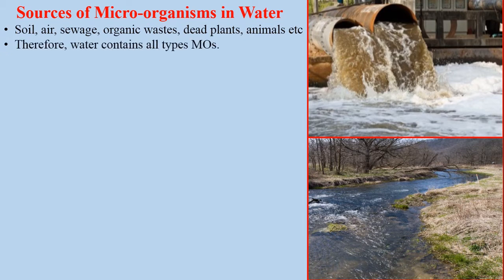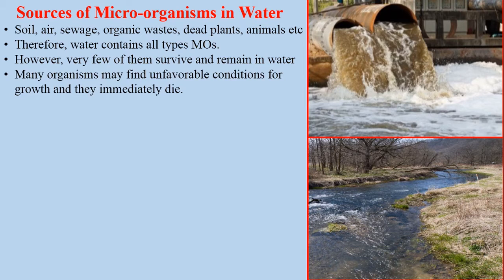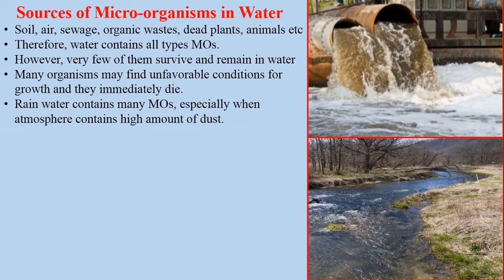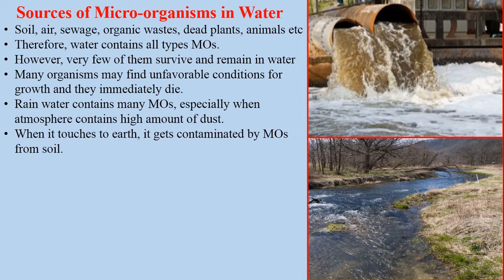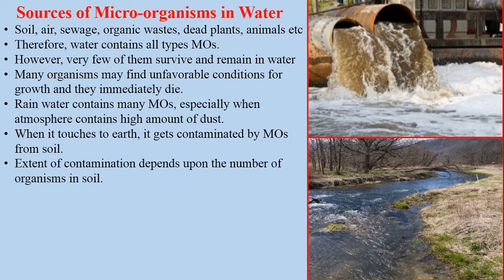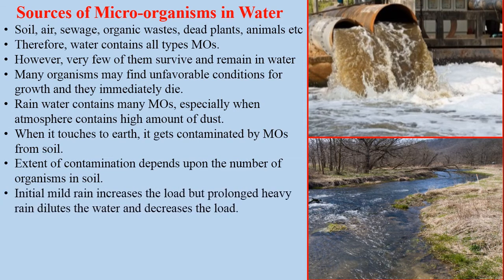Therefore, water contains all types of microorganisms. However, very few of them can survive and remain in the water. Many organisms may find unfavorable conditions for growth and immediately die. The rainwater contains many microorganisms, especially when the atmosphere contains a high amount of dust. When rainwater touches the earth, it gets contaminated by microorganisms from the soil. Initial mild rain increases the load of microorganisms in the water, but later prolonged heavy rain dilutes the water and decreases the load of microorganisms.